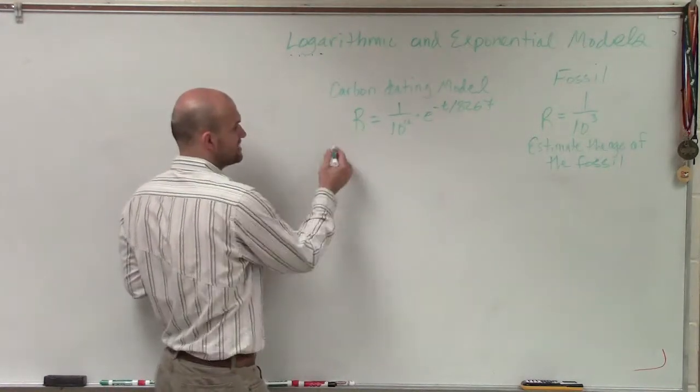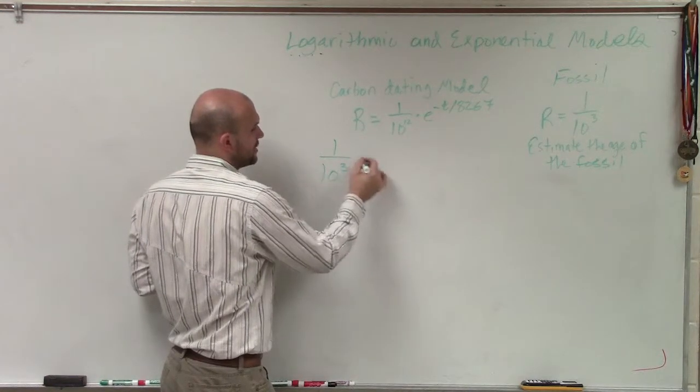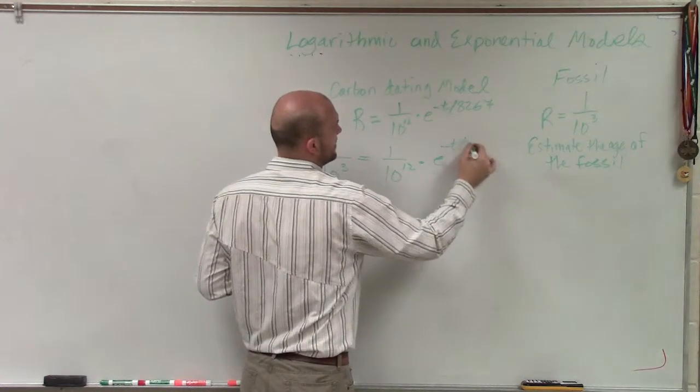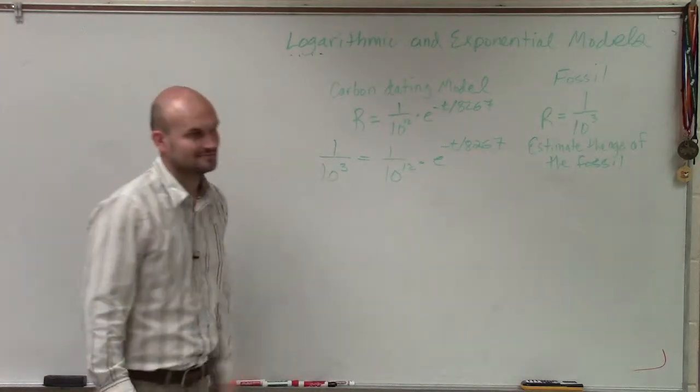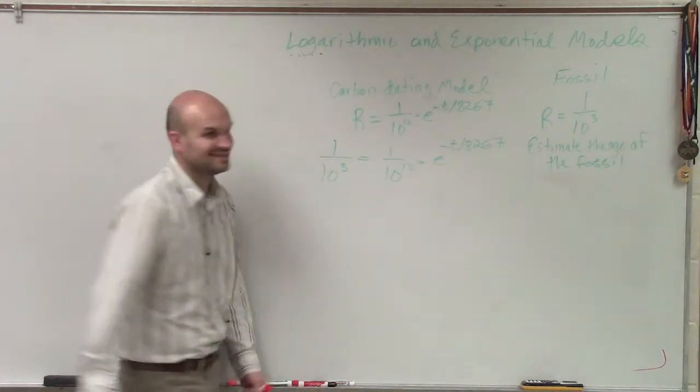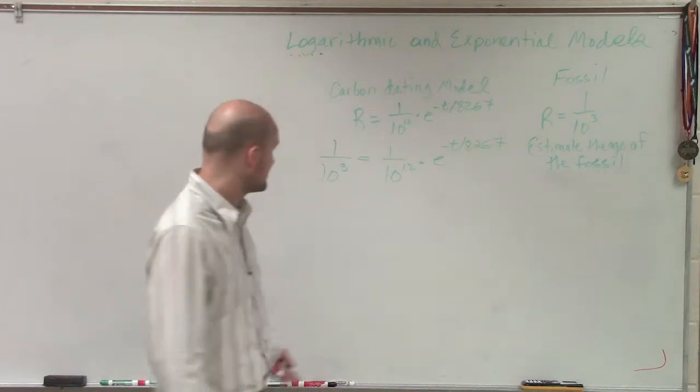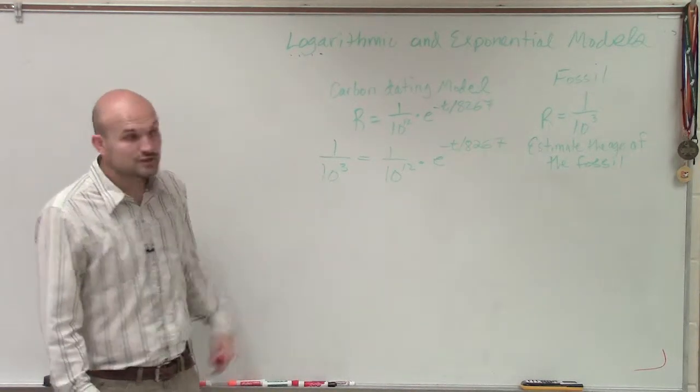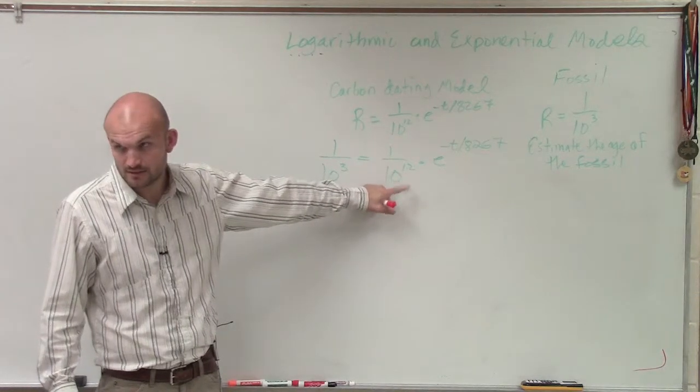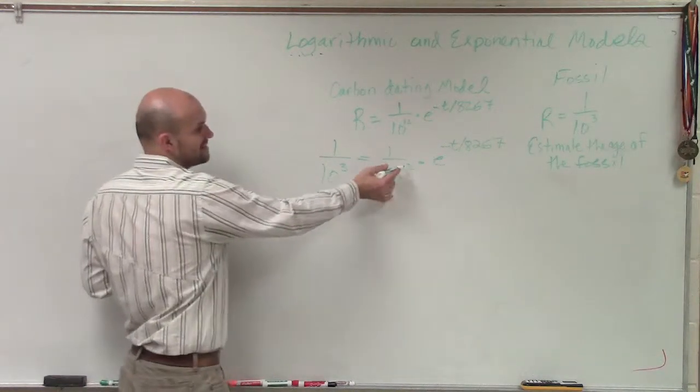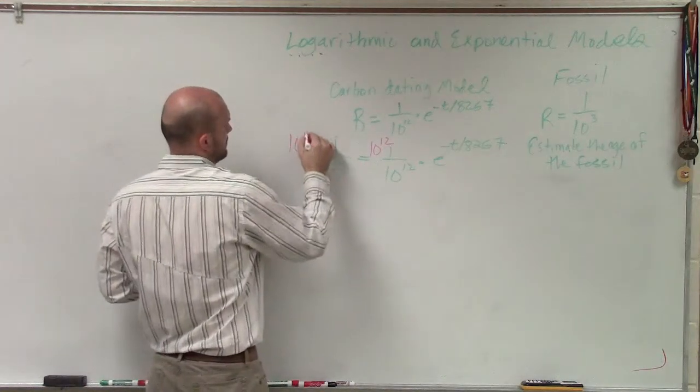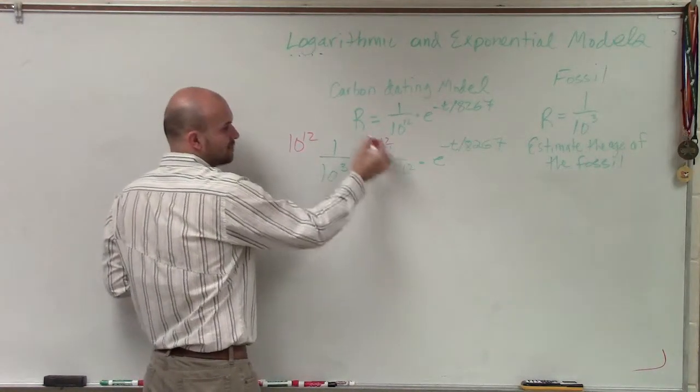So what we're going to do is, since we know r is 10 over 3, we're going to put 10 to the third power in for r equals 1 over 10 to the 12th times e to the negative t divided by 8,267. So now, ladies and gentlemen, what we need to do is we need to solve for this t. So to do that, what we need to do is we need to get these off the bottom, right? We need to get rid of this. So to do that, let's get 10 to the 12th. If I multiply each side by 10 over 12, well, 10 over 12 divided by 10 over 12, that's just going to go to 1.